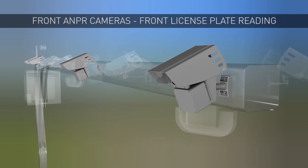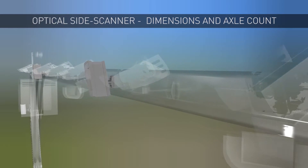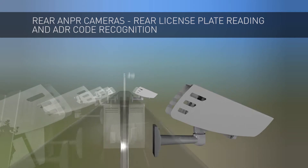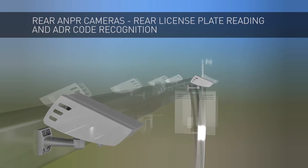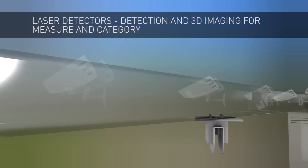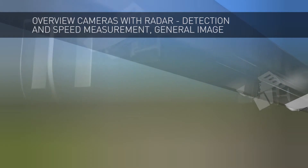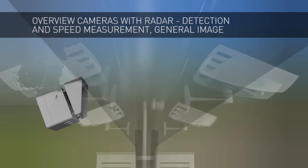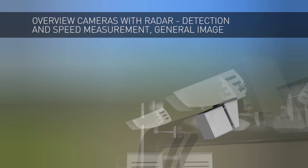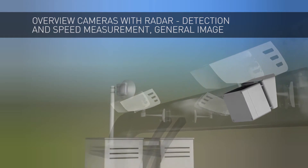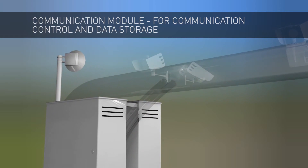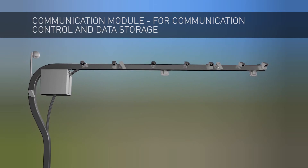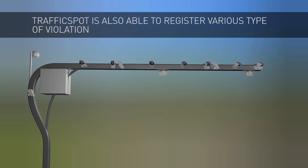Front View ANPR cameras record the images of front license plates. An optical side scanner prepares side images from vehicles. Rear ANPR cameras take pictures of the back of the vehicles. The laser scanner creates a 3D modelling of each passing vehicle with exact measurements. Overview cameras record the passing vehicle's images. Velocity measuring radars send a signal to their cameras, thus completing vehicle detection and certified speed measurements. The communication unit forwards the compiled data packages to a pre-designated location.